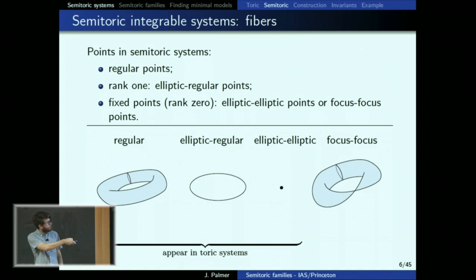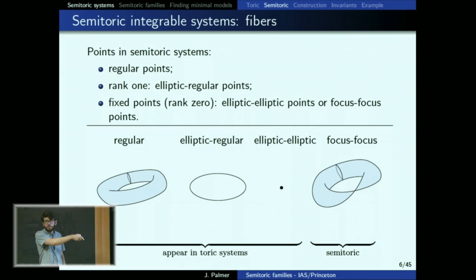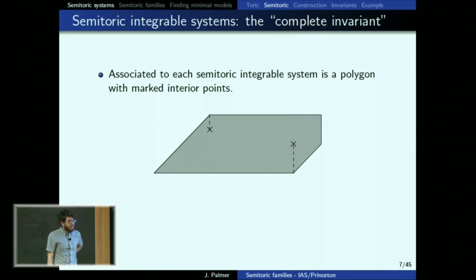So you get pictures like this. The fibers in a toric integrable system have varying dimension. The new type is this focus-focus fiber, which if you don't require simplicity may have more than one pinch. We'll be restricting away from that sometimes.